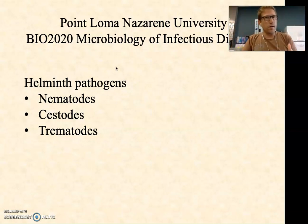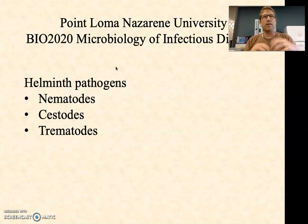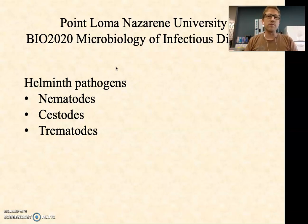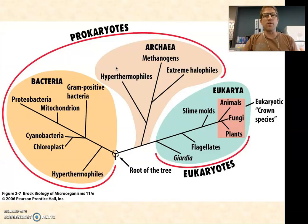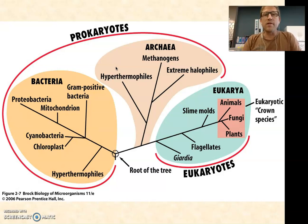Keeping in mind these are eukaryotes. In this case, because they're worms, they're multicellular eukaryotes that have large complex animal structures. They've got digestive tracts or at least partial digestive tracts, circulatory systems, etc. These tend to be very large, and in a class of microbiology you might wonder why we're talking about them — hopefully you'll see why we're including them in this microbiology course.